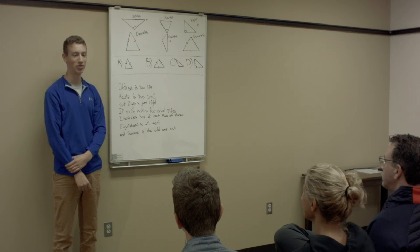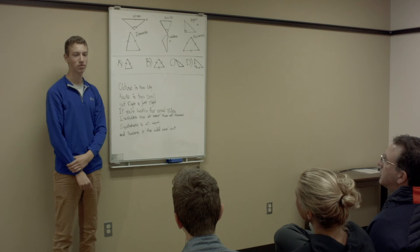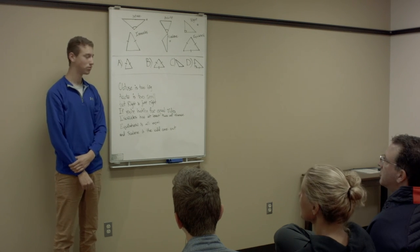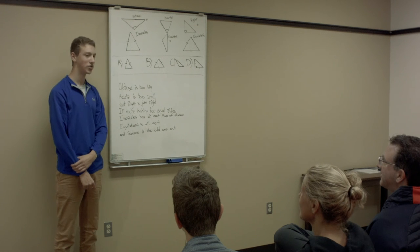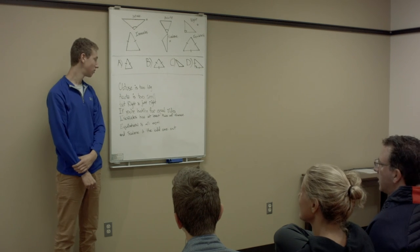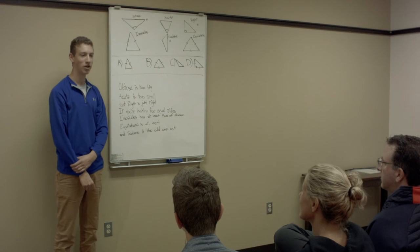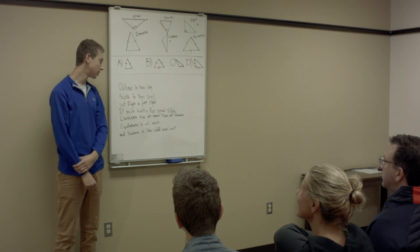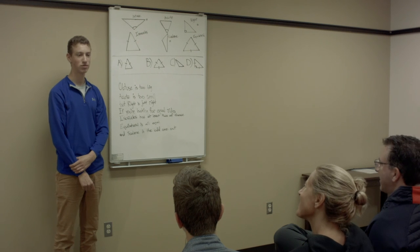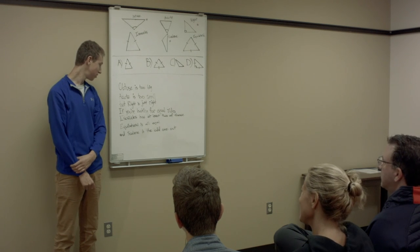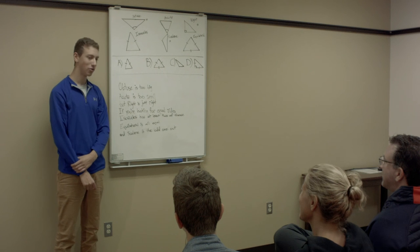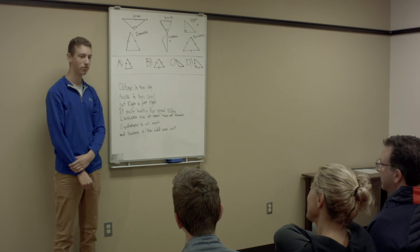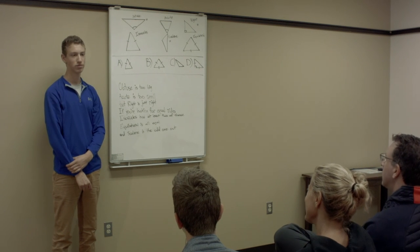Now repeat after me. Obtuse is too big. Acute is too small. But right is just right. If you're looking for equal sides, isosceles has at least two of these. Equilateral is all equal. And scalene is the odd one out.